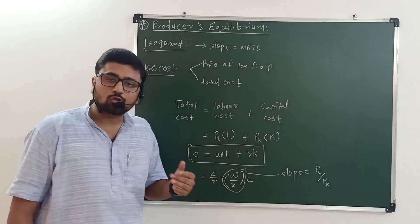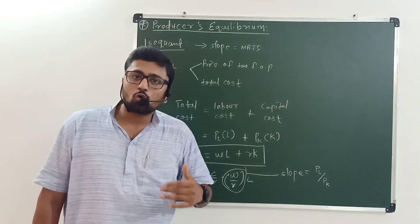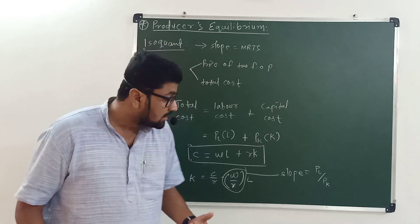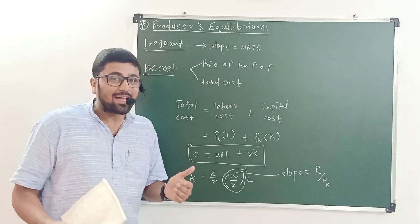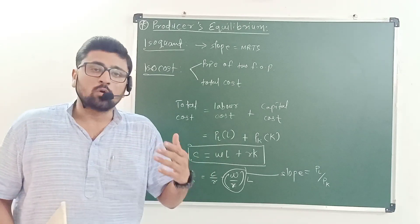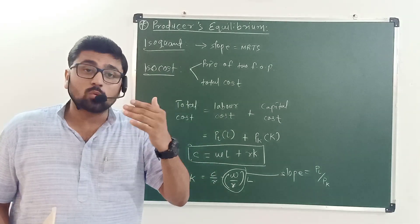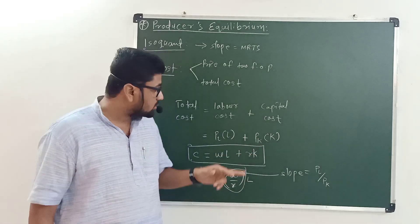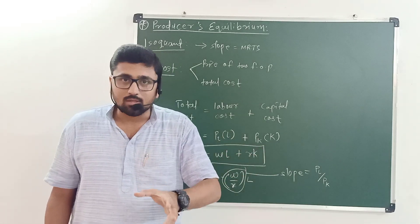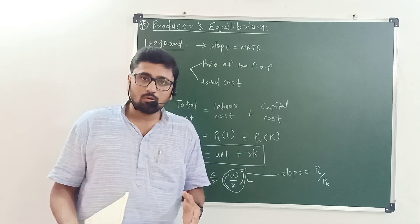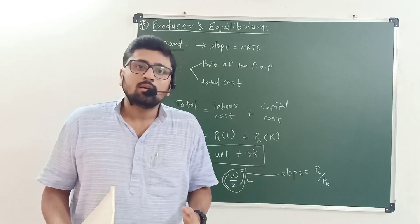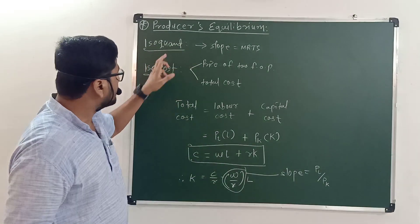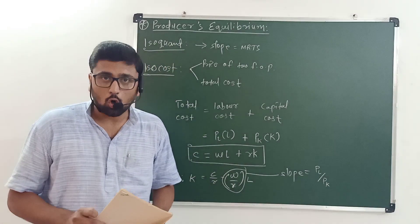The negative sign shows that a producer cannot increase the use of both factors of production simultaneously because total cost is given and fixed. So, if a producer wants to increase the use of capital, it has to reduce the units of labor and vice versa. Now we are going to understand the idea of producer's equilibrium with the help of iso-quant and iso-cost.